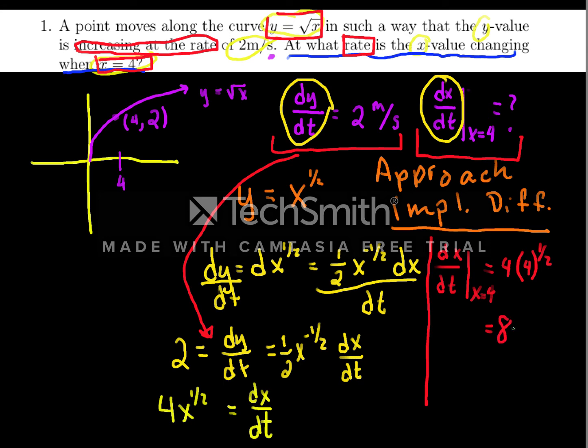And now I need to put my units in here. But the units for this 2 were meters per second. And that's the only value with units we have. So this will be meters per second. And that's our answer. Our answer is that when x equals 4, the rate at which the x value is changing is 8 meters per second.